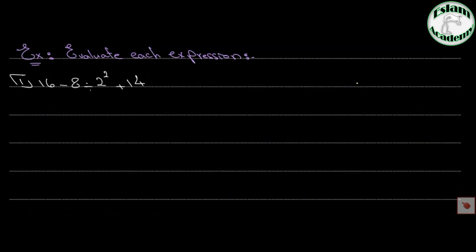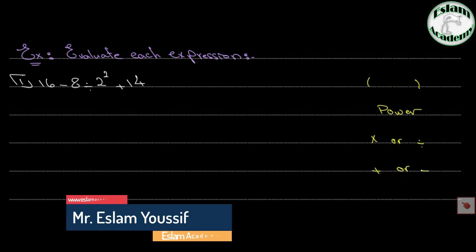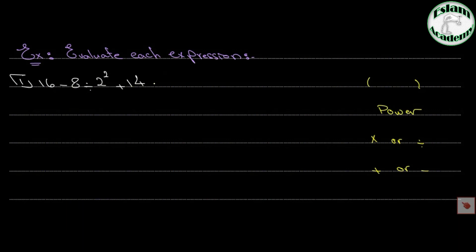Question number one: evaluate the expression 16 minus 8 divided by 2 to the power 2, plus 14. To solve using order of operations we go: brackets, then power, then multiply or divide, then plus or minus. There is no bracket, but we have a power, so underline that operation. We get 16 minus 8 divided by 2 raised to the power 2, which is 4, plus 14.